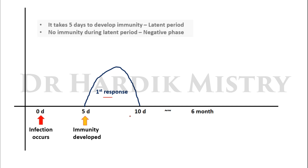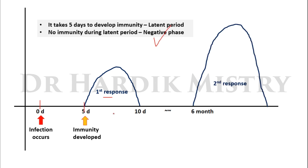It takes five days to develop immunity, so from zero to five days is known as the latent period. During these zero to five days, there is no immunity present in the subject's body — this phase of no immunity is known as the negative phase. If the same virus or bacteria attacks again after six months, the same cells produced during the first response are already present and will attack again, but the response is more enhanced — this is known as the secondary response. These concepts of latent period, negative phase, and secondary response are present in the acquired type of immunity.